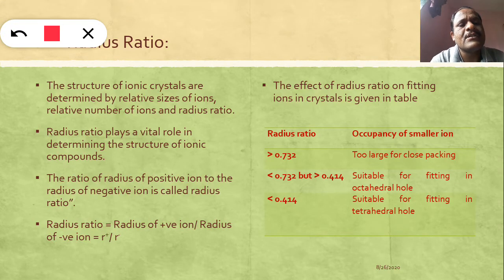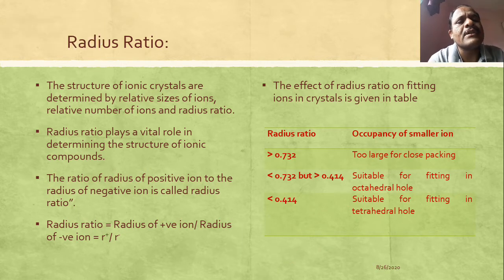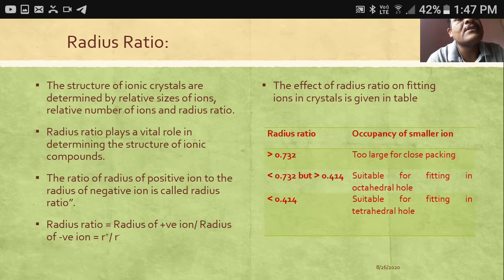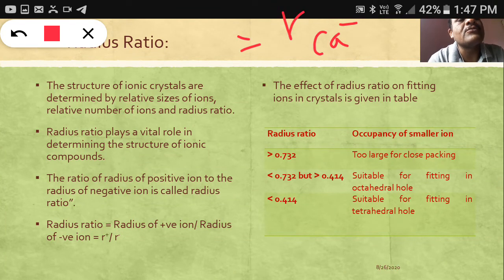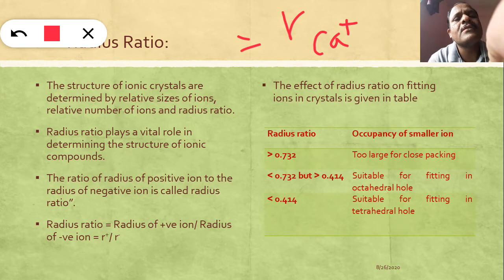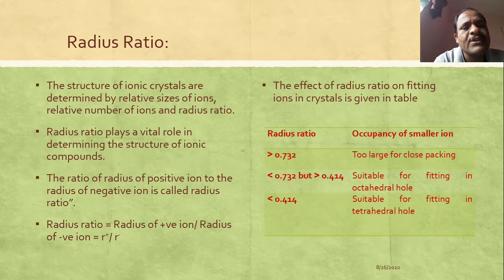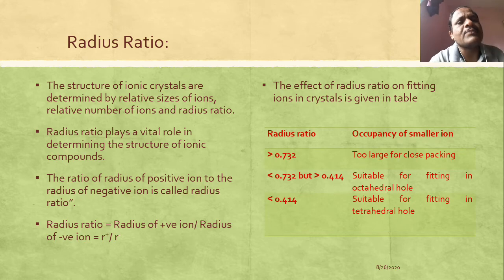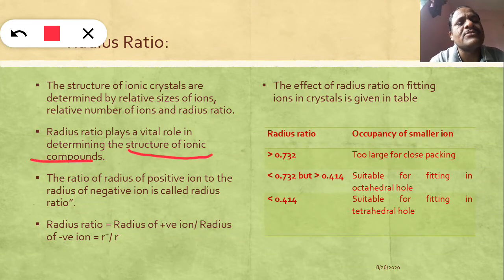The radius ratio is equal to the radius of the cation divided by the radius of the anion. With the help of this radius ratio one can easily understand the structure of an ionic compound. The structure of an ionic compound can be easily understood with the help of the radius ratio.